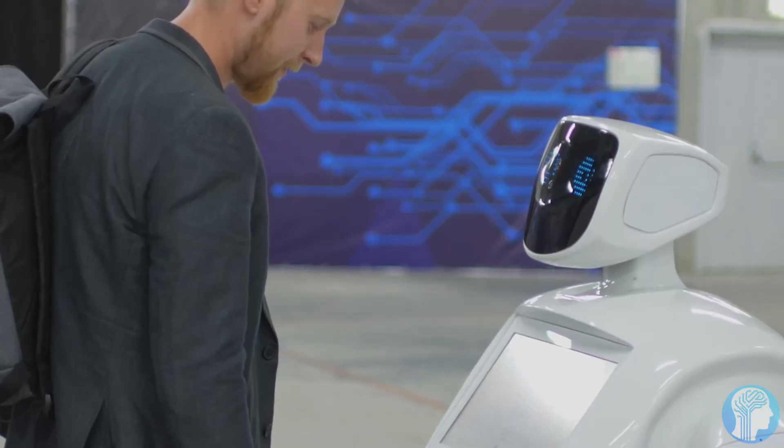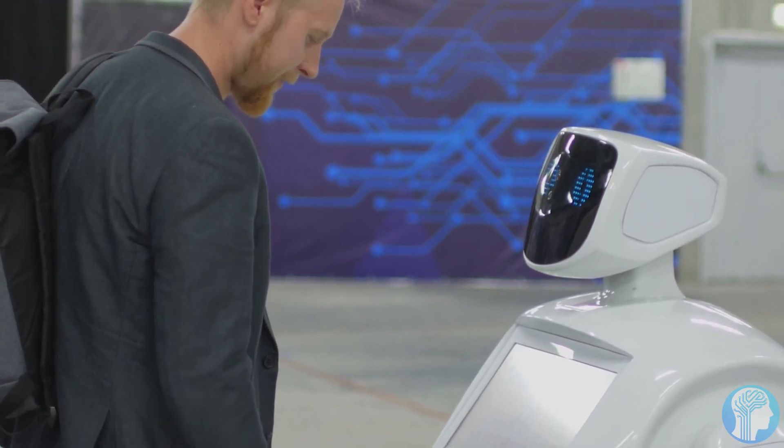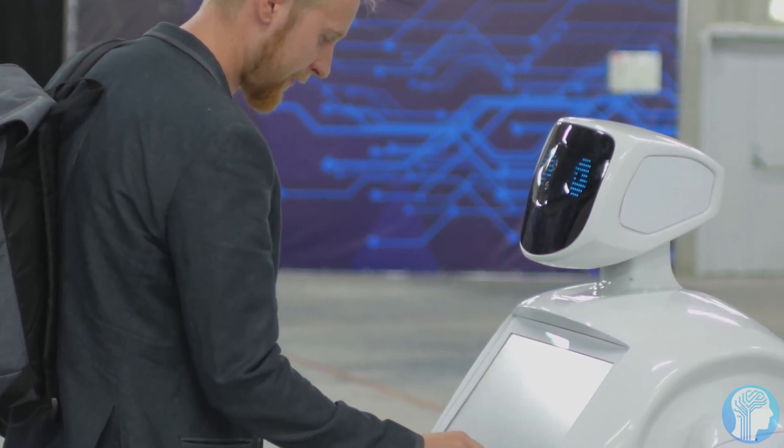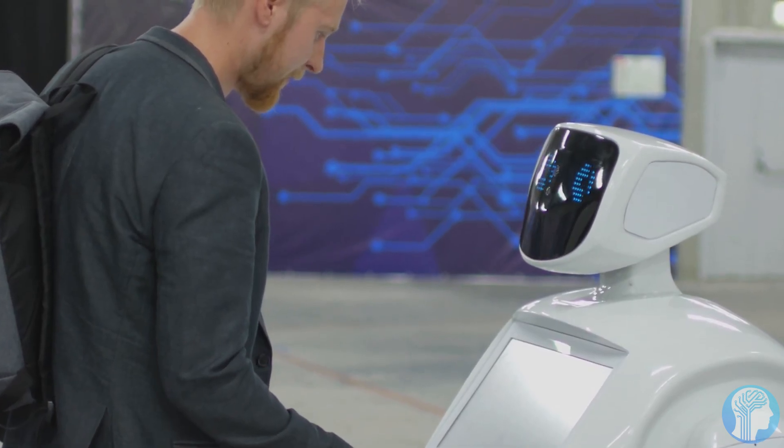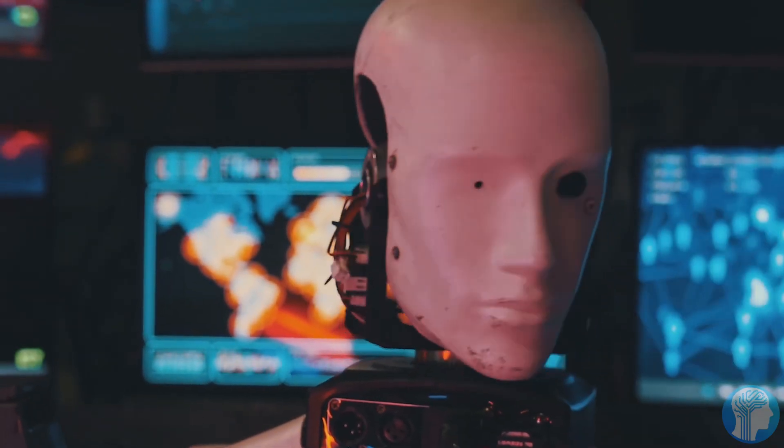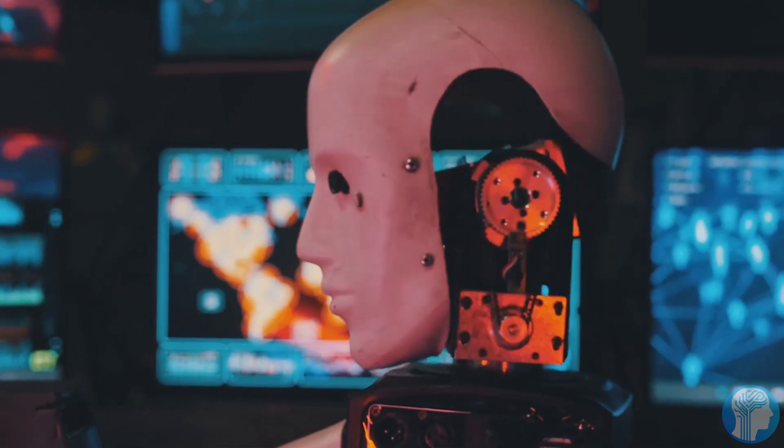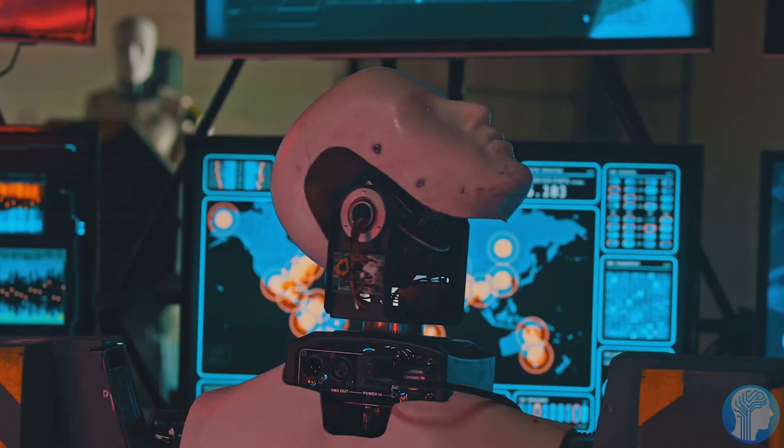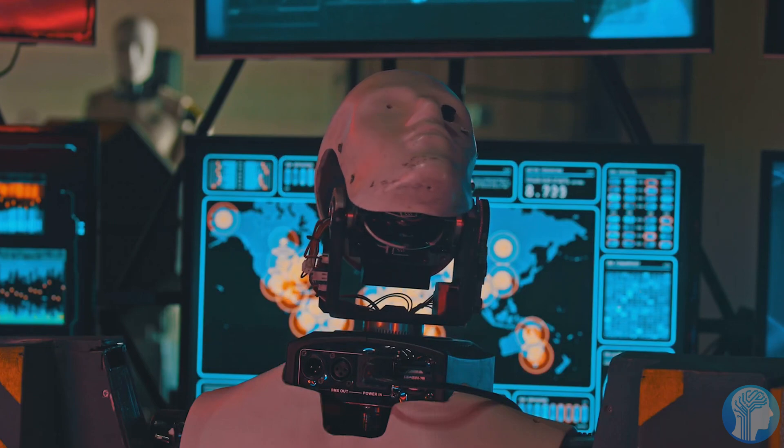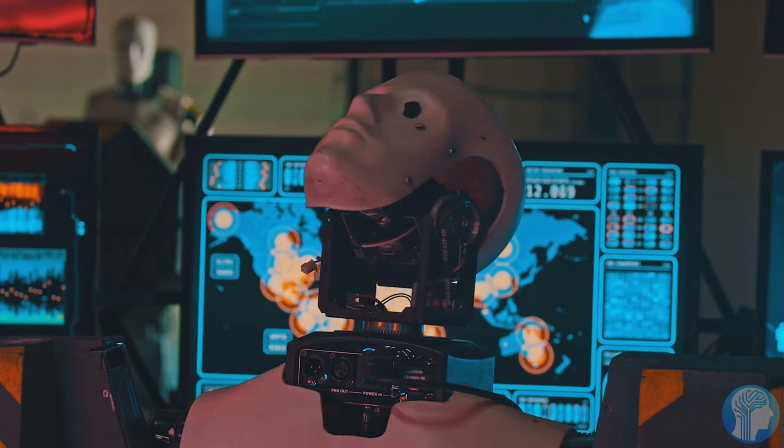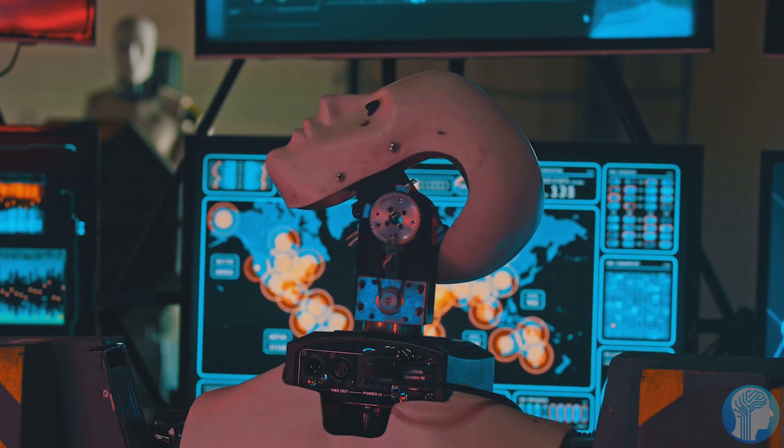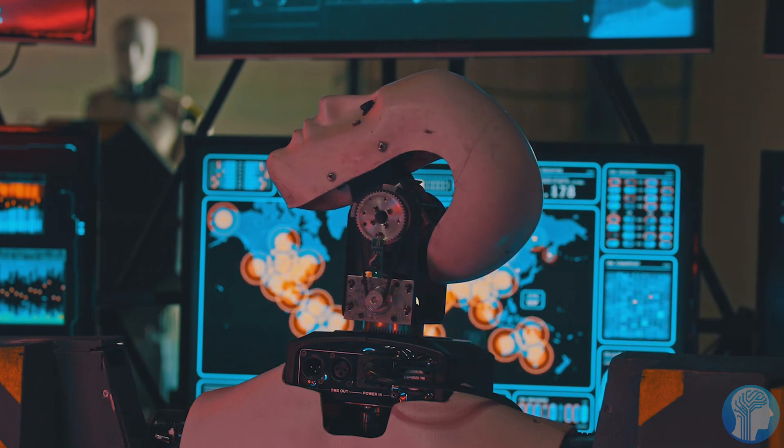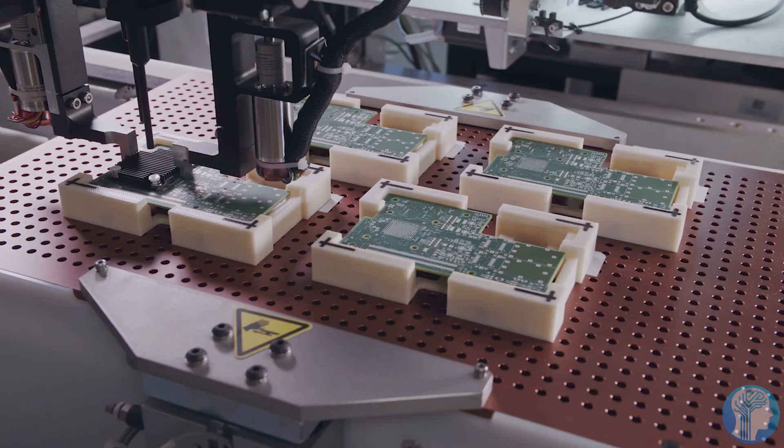As we look ahead, the combination of 3D-printed prosthetics and BCIs could redefine our perception of disability. No longer would amputees be limited by the constraints of traditional prosthetics. Instead, they could embrace a future where their artificial limbs become extensions of themselves, blurring the line between man and machine. The fusion of cutting-edge technologies is unlocking a new chapter in human augmentation, offering hope and possibilities for a brighter, more inclusive future.